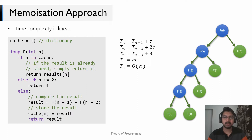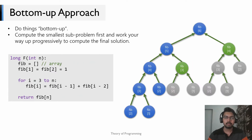So T(n) becomes T(n−1) plus a constant. We can write T(n−1) as T(n−2) plus C, making T(n) = T(n−2) + 2C. Progressively simplifying, we get T(n) = nC, which means T(n) = O(n). Just by applying memoization we've turned an exponential algorithm into a linear one.